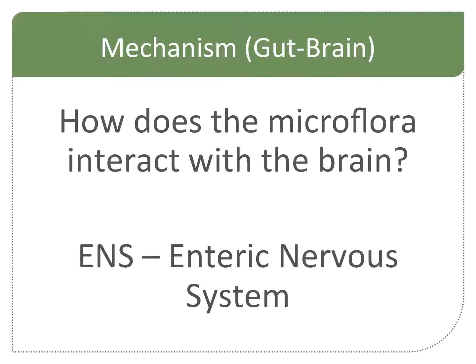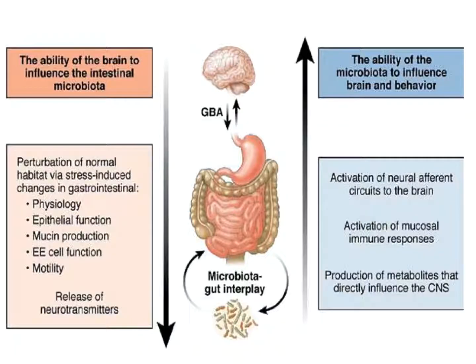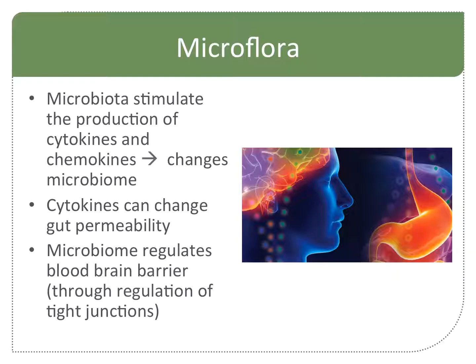So how does microflora interact with the brain? Obviously, it's doing it through the enteric nervous system, and it's a two-way street. The brain can influence the intestinal microbiota through physiology, epithelial function, mucin production — there's your IL-13 again — and motility, with the release of neurotransmitters. But in the other direction, the microbiota can also influence the brain through neural circuitry. The microbiota themselves can stimulate the production of cytokines and chemokines, which will change what your microbiome is made of.